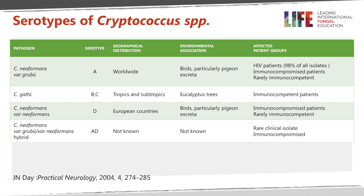For a long time we've recognised serotypes of Cryptococcus neoformans, and these have increasingly been replaced by genotypes. Cryptococcus neoformans variety grubii is denoted as serotype A. It's found around the world and birds, particularly pigeons, are implicated in the environment. The patient groups infected with this serotype are HIV-positive patients and immunocompromised patients, and very rarely immunocompetent individuals.